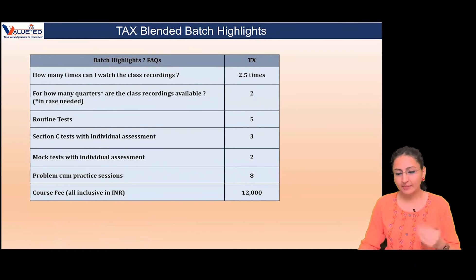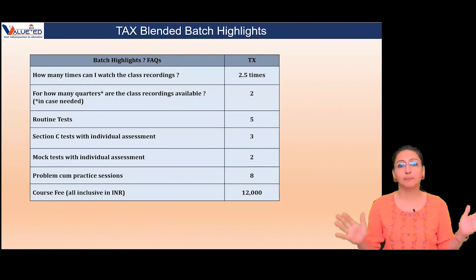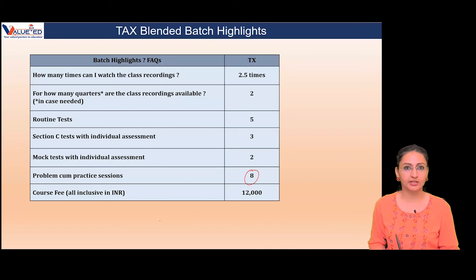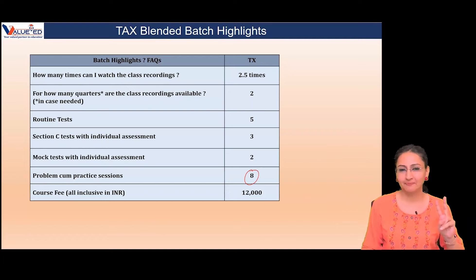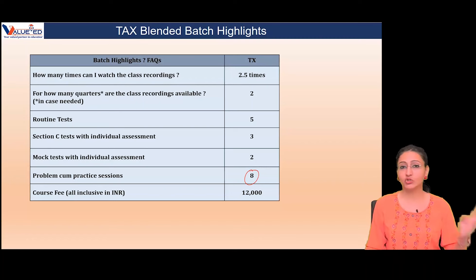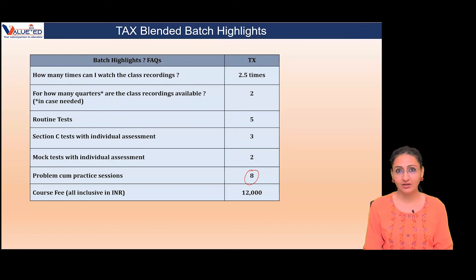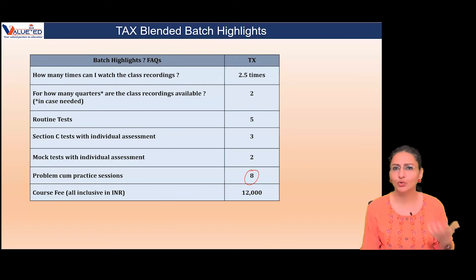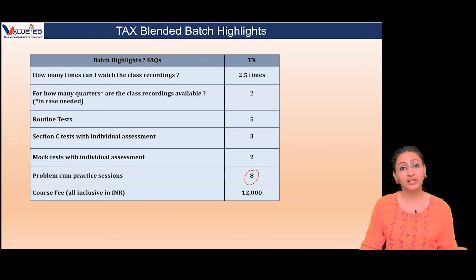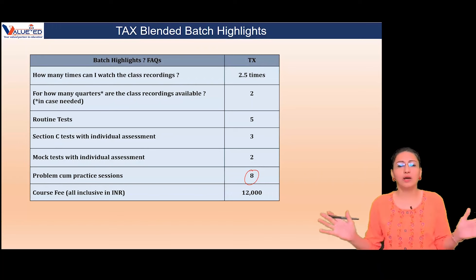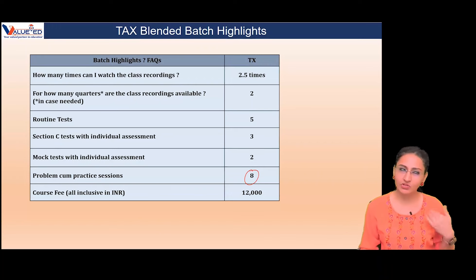Now let me tell you what you'll get from studying with me. Because the tax syllabus is very long, there will be 8 problem classes — meaning we meet every weekend. We have two months. On average, taking every Sunday, that's 4 Sundays per month — so 4 plus 4 equals 8 Sundays we need to meet. Maybe it's a Saturday sometimes, but we meet every week.